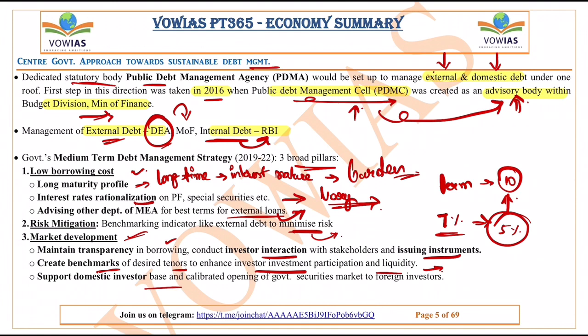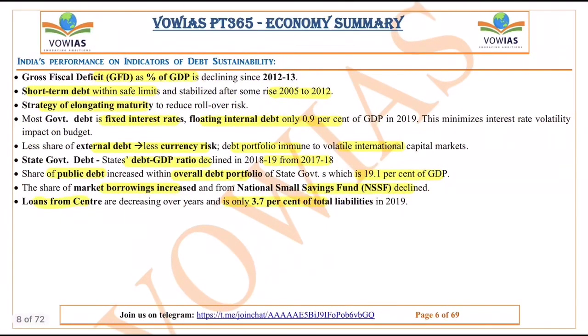There must also be support for the domestic investor base and calibrated opening of government securities to foreign investors. When domestic investors are given more support, more investment can come in and they can take advantage of the current investment regime. Now looking at India's performance on indicators of debt sustainability: the gross fiscal deficit as a percentage of GDP has been declining since 2012–13.